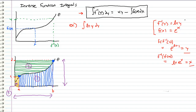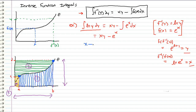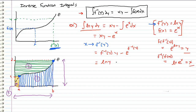So we let f inverse of y equal natural log of y, and we know f of x equals e to the x. Let's plug that into our formula. We get: equals x times y minus the integral of e to the x dx, which comes out as x times y minus e to the x. But since we are integrating with respect to y, we want everything in terms of y, so we have to change all of our x's into f inverse of y's. When we do that, we get f inverse of y times y minus e to the f inverse of y. Now we plug in for f inverse of y, which is just the natural log of y.